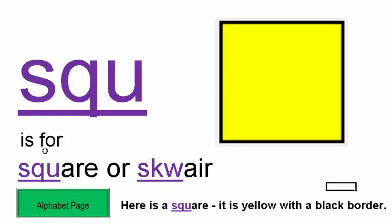SP is also for SQUARE. Here is a square — it is yellow with a black border. That's a SQUARE.